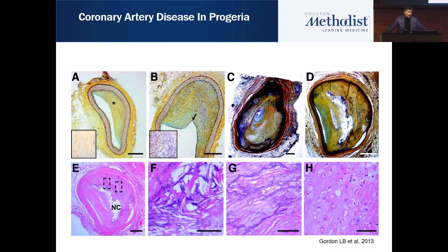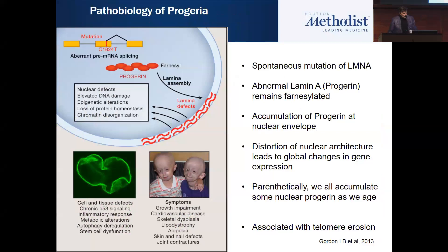We were interested to understand the role of the endothelium in progeria, since we believe vascular disease originates there. Progeria is due to a spontaneous mutation of lamin A, in which the lamin A remains farnesylated — the farnesyl group can't be cleaved off due to loss of a splice site. This causes the abnormal progerin to localize in the nuclear envelope, which becomes markedly distorted. That change in nuclear architecture is associated with global changes in the transcriptional profile and function of these cells.